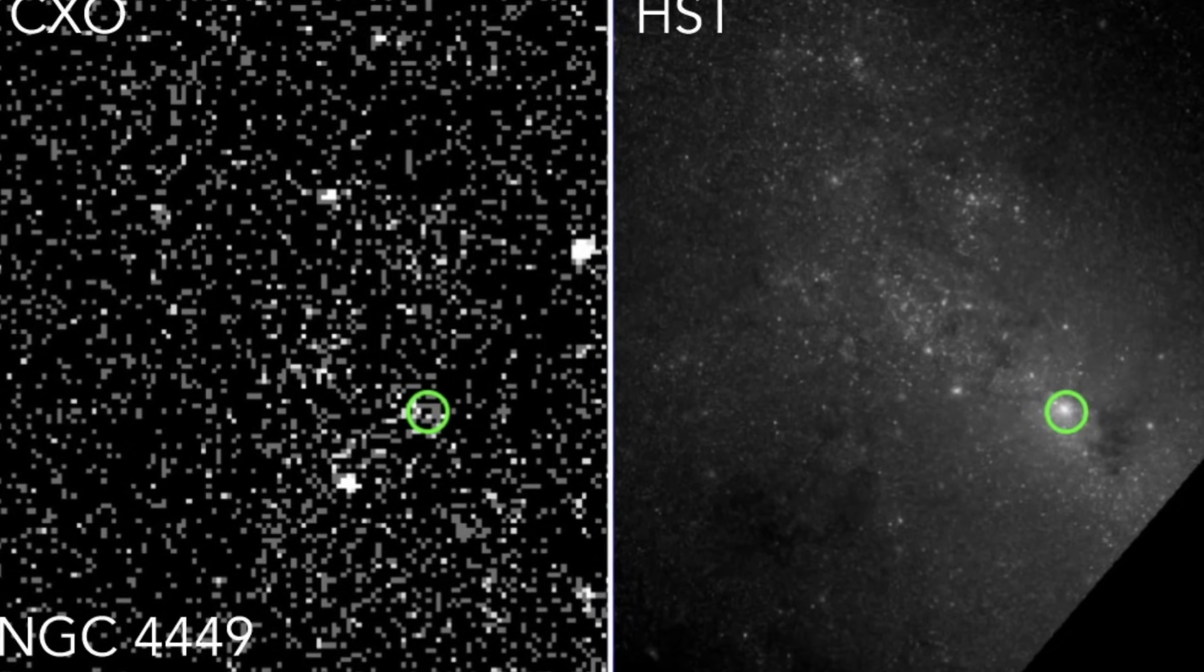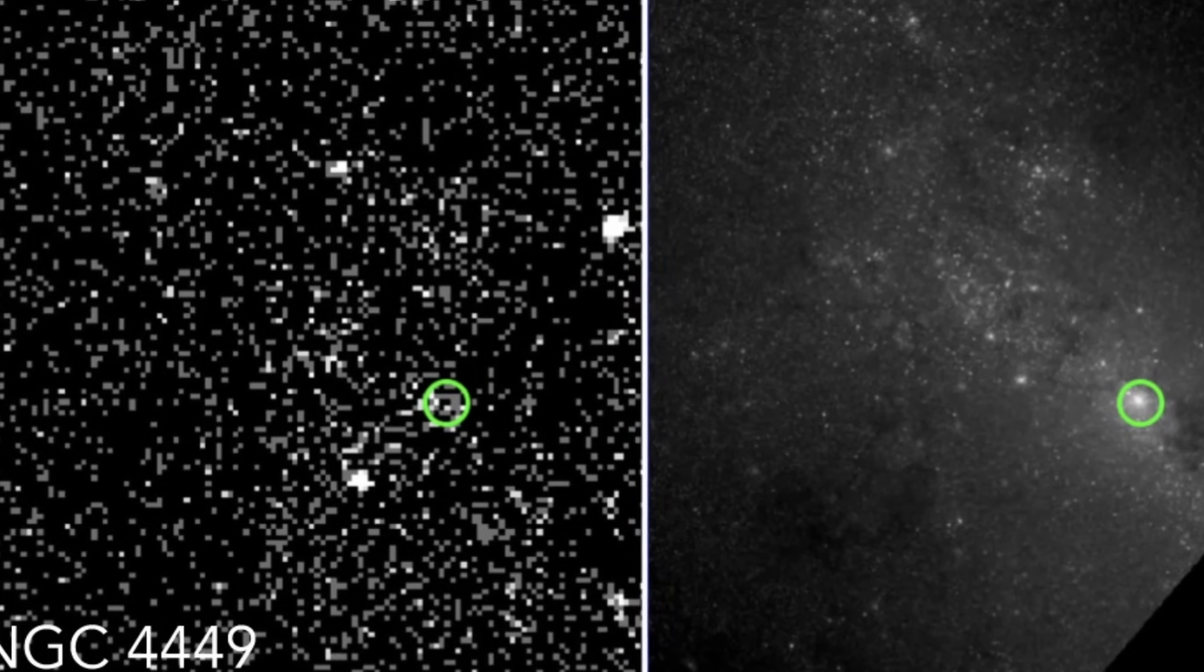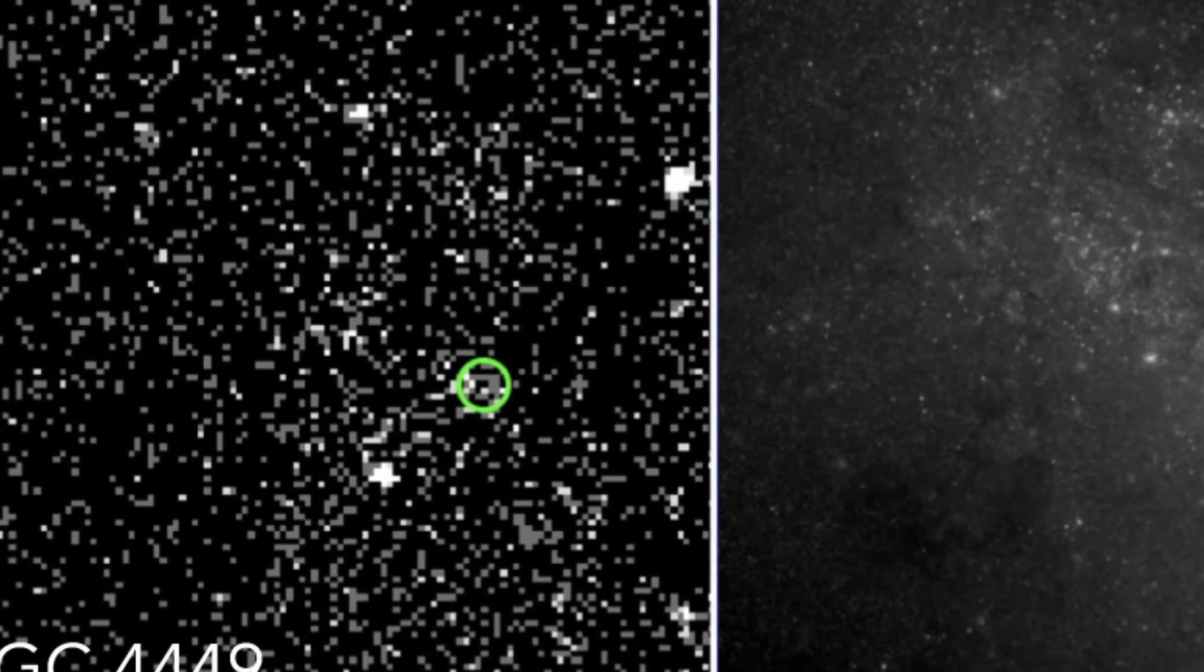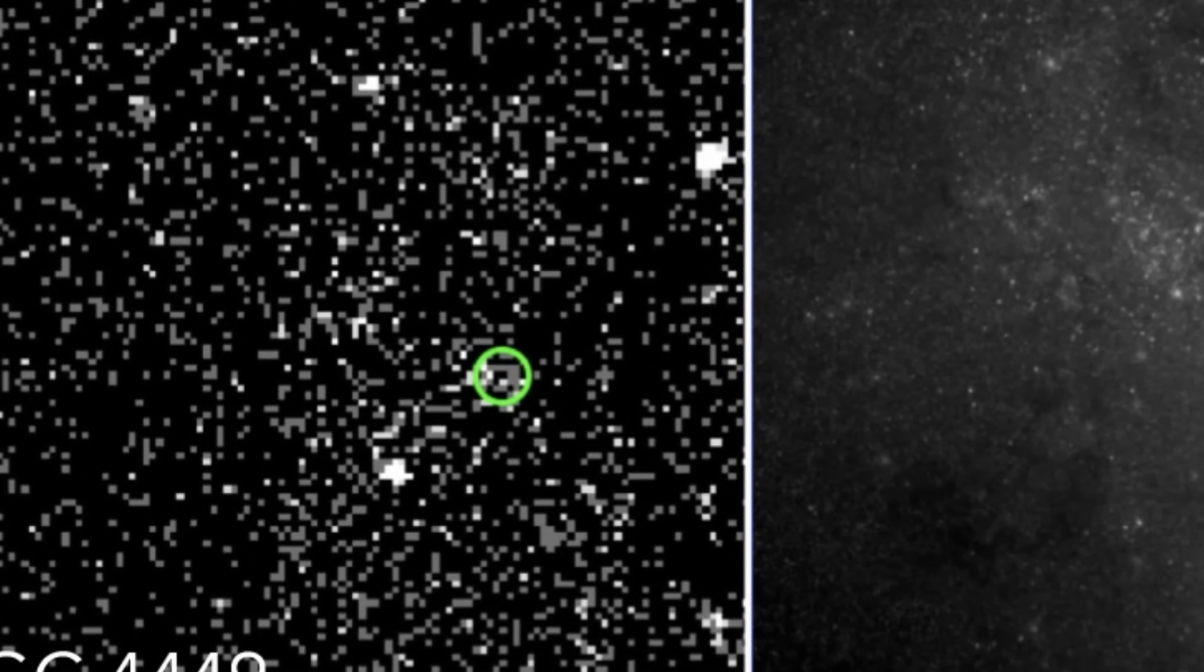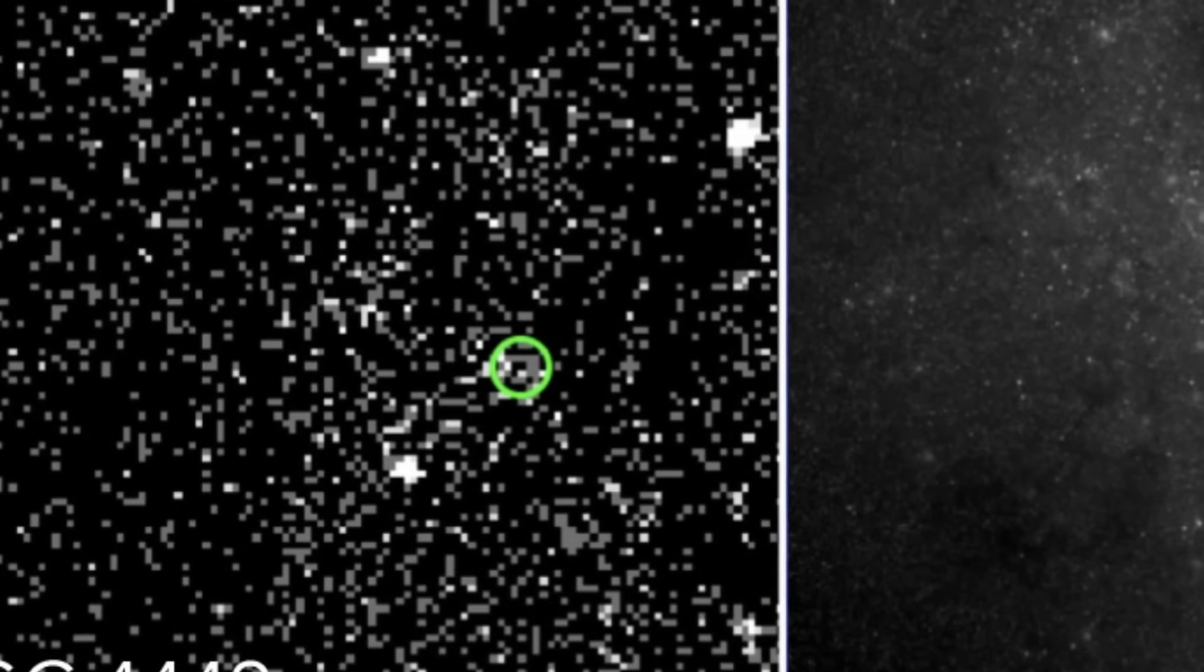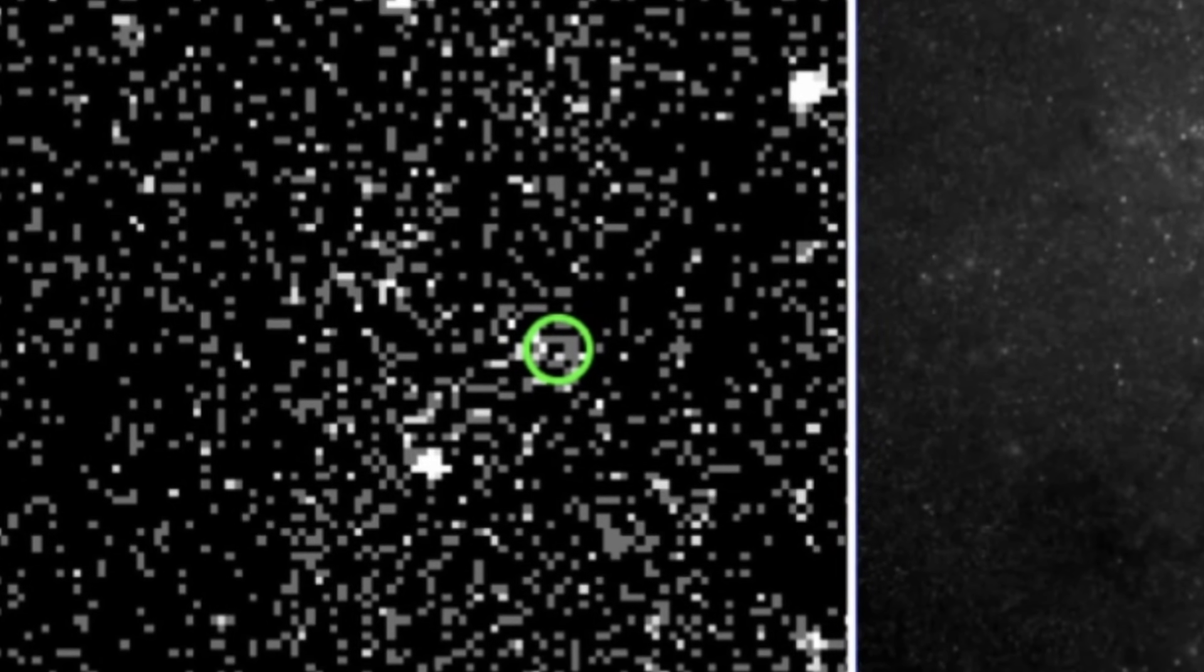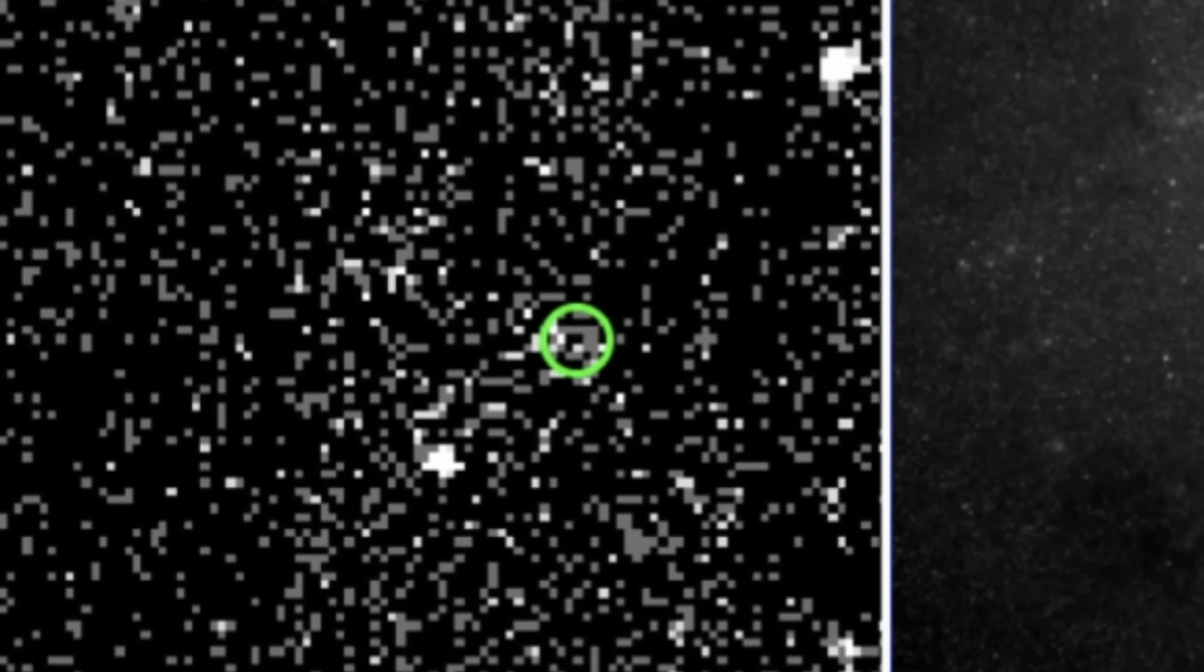But in a more recent study, the scientists decided to take a look at 108 different galaxies using both Chandra observations and some of the observations from other telescopes, such as the Hubble telescope, to try to compare various dense star clusters with the X-ray emissions coming from those clusters.